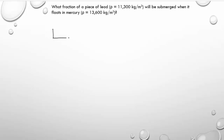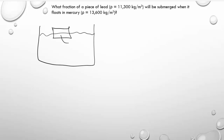Here's our chunk of lead floating in some mercury. We want to know what percentage is below the level of the mercury. We have a useful equation derived in the last video: the volume displaced — which is the amount that's under the mercury — divided by the volume of the object, equals the ratio of the density of the object to the density of the fluid. What the question is asking for is what fraction is submerged, which is exactly this ratio — submerged volume divided by total volume.